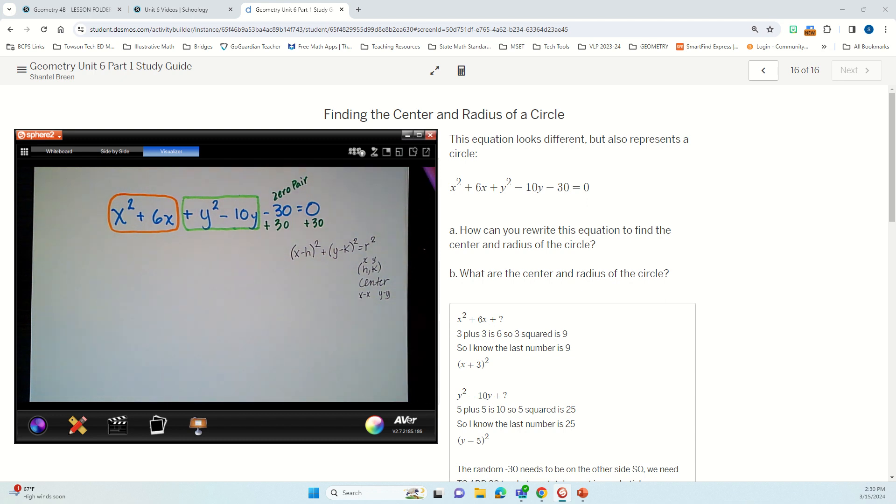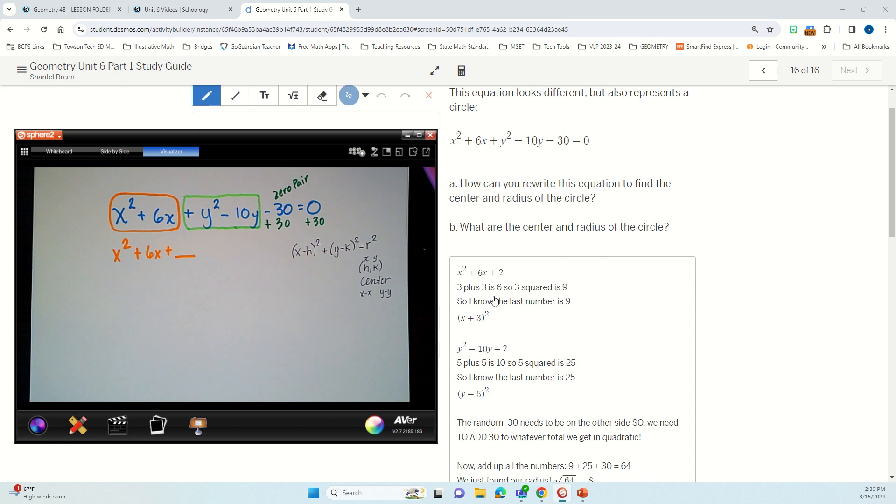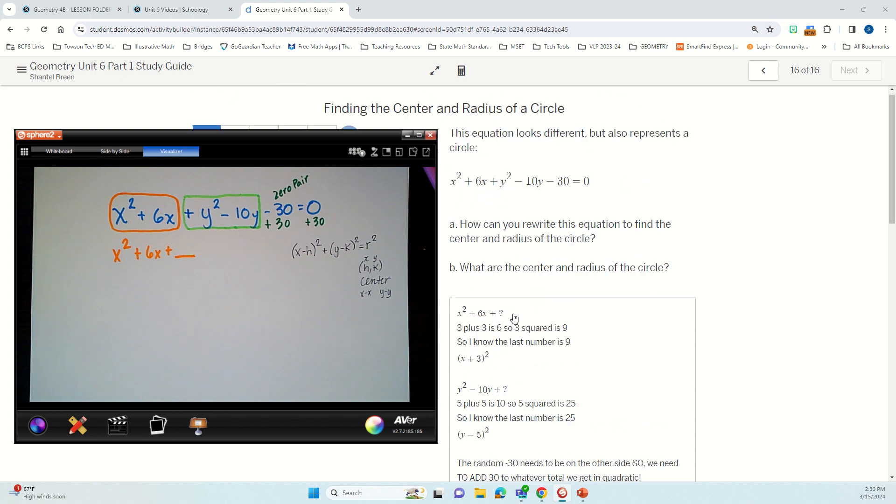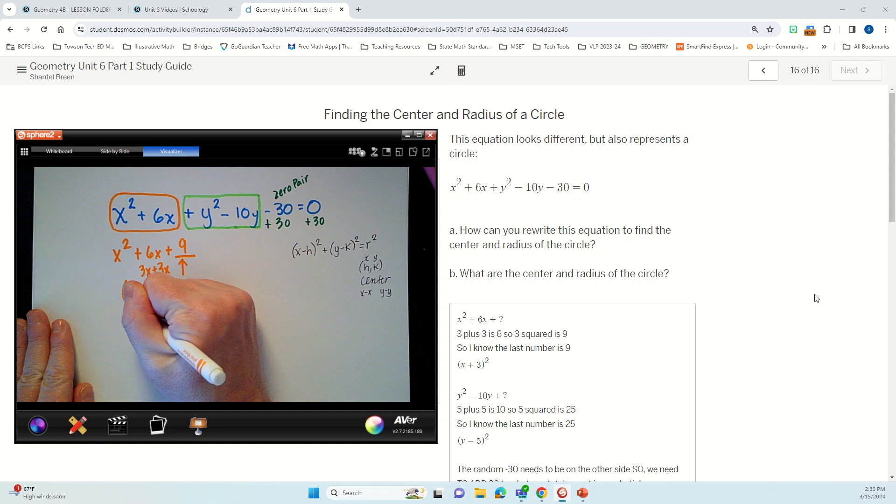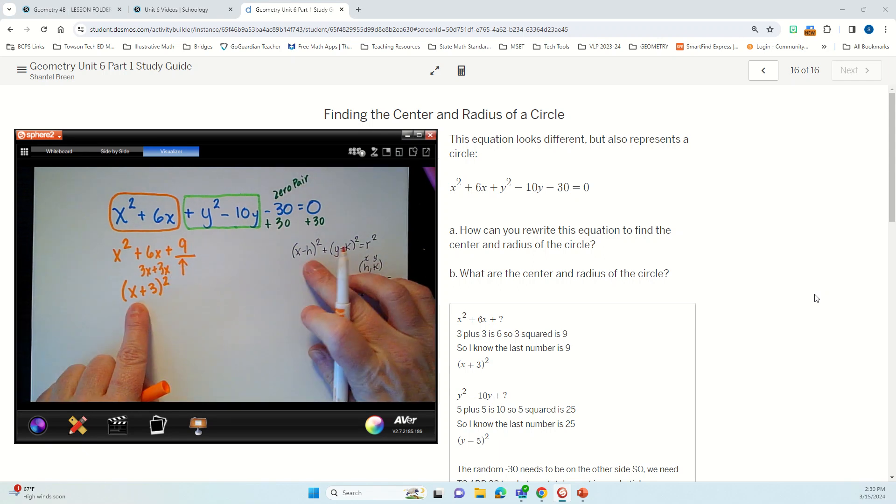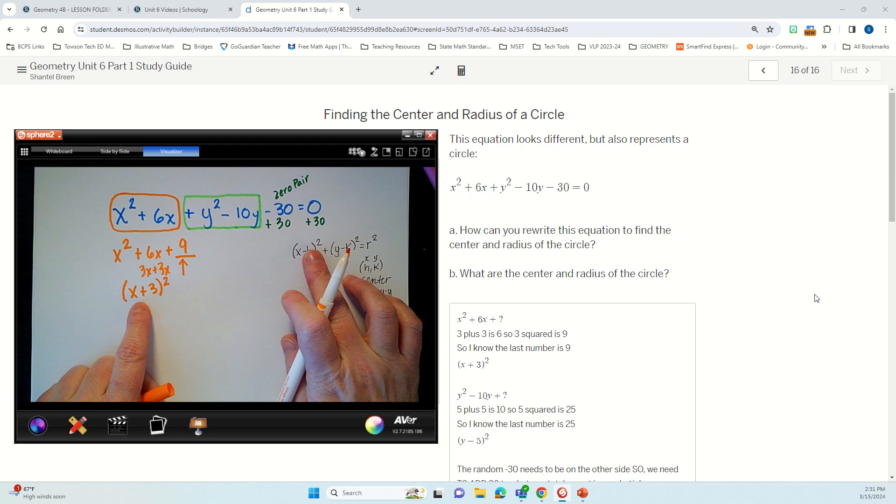All right, so here we go. Let's start with the first one. All right, so I have x squared. I have a positive 6x, and I'm missing this number. Okay, and I have all of this in our notes here. We kind of worked this out, talked it out. All right, so I know that this is going to be a square number, and I know 3 plus 3 is 6. So this is going to be 3x plus 3x. That's how I got the 6x. So that means this has to be 9. So now I know that this is going to be x plus 3 squared. So I just found my first part of my quadratic, of my equation of a circle.